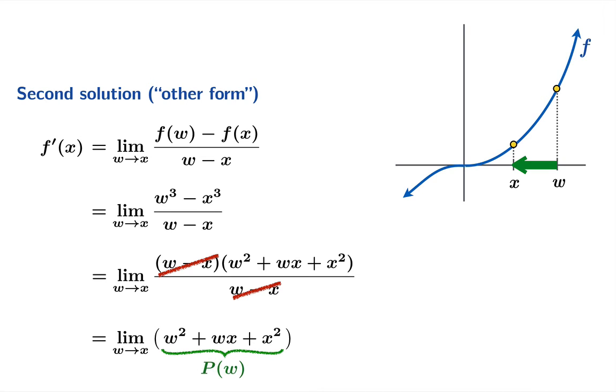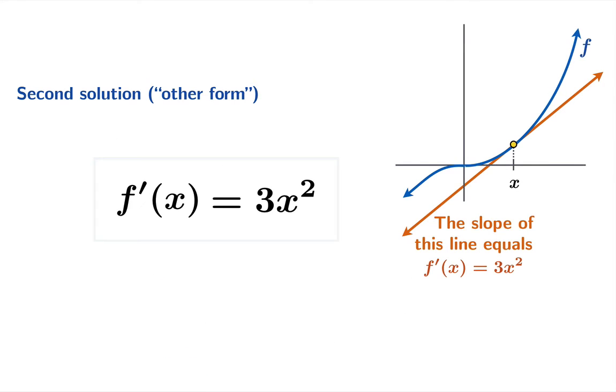And so we should just be able to now substitute x for w and in this case what we get is x squared plus x squared plus x squared or 3x squared and indeed that's what we were looking for. The value of the derivative function is in fact 3x squared.